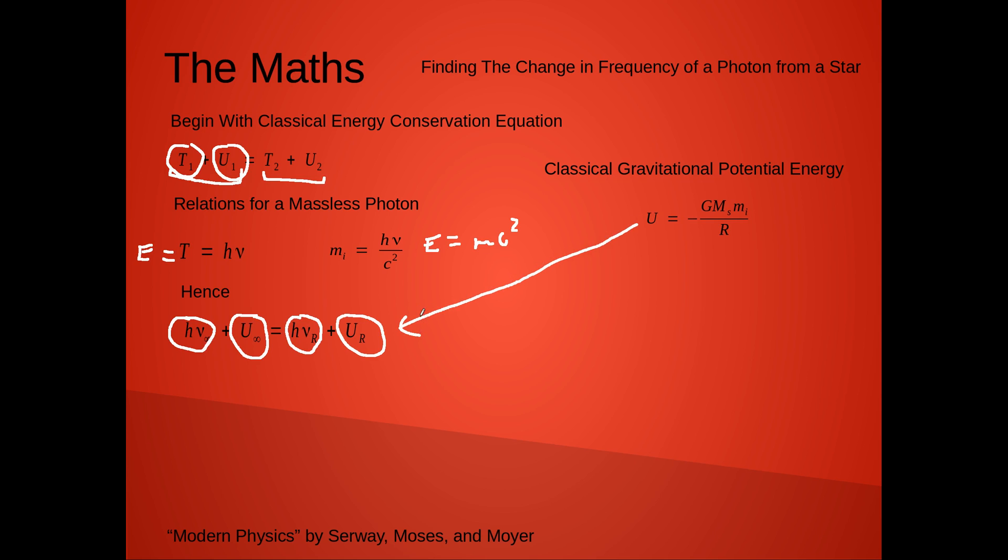So, when we plug that in for our potential energies, and we plug in our effective mass into the mass here as our inertial mass, we're left with this equation here, where if we divide out by Planck's constant, we'll get this equation here.